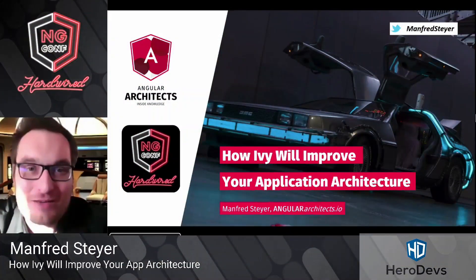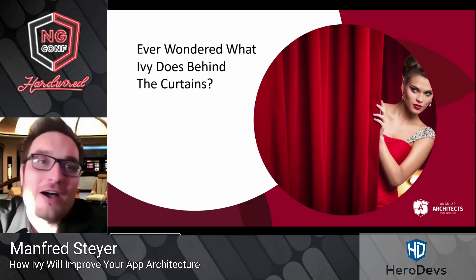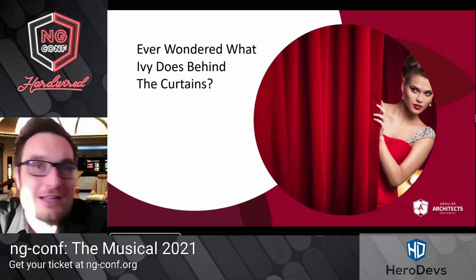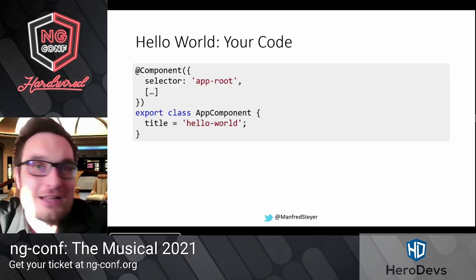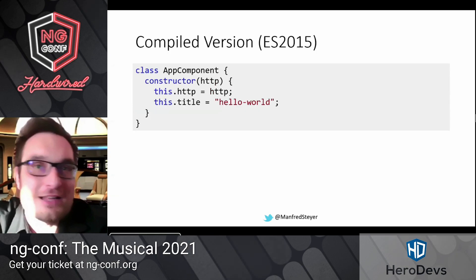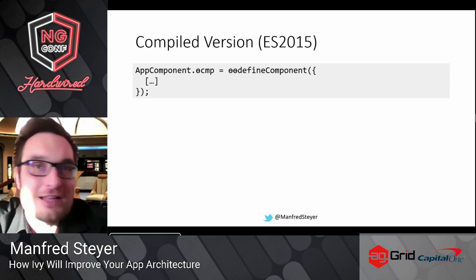Thanks for having me. This will be about Ivy and architectures. Did you ever wonder what Ivy does behind the curtains? We've heard a lot about Ivy, we've seen that it leads to smaller bundles, but how does it really work? Let me give you a small example. What you see here is a simple Hello World application with a title that is data-bound within the templates between two h1 tags. When Ivy does its work, the TypeScript compiler down-levels the component to ECMAScript 2015 or ECMAScript 5 equivalent, and then Ivy adds some metadata to this component as a bunch of static properties.